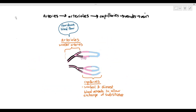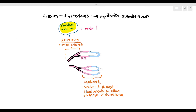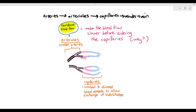Before we go into capillaries in detail, in the previous video I did mention that arterioles have a very important function, where they have to make the blood flow slower before it enters the capillary. And why does it need to make the blood flow slower? This is where we are going to be talking about the reason.